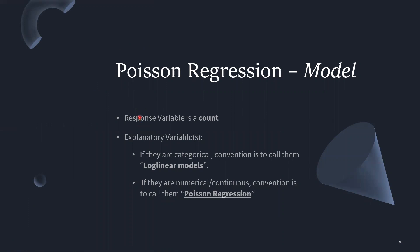In regression, we estimate values of the dependent variable corresponding to the independent variable. Our response variable is a positive discrete count variable, while explanatory variables can include both categorical and continuous variables. When both categorical and continuous independent variables are present, the Poisson regression is called a log-linear model. If we have only continuous independent variables, we call it simply Poisson regression. So we say Poisson regression for continuous/numerical independent variables, and log-linear model when categorical variables are also included.